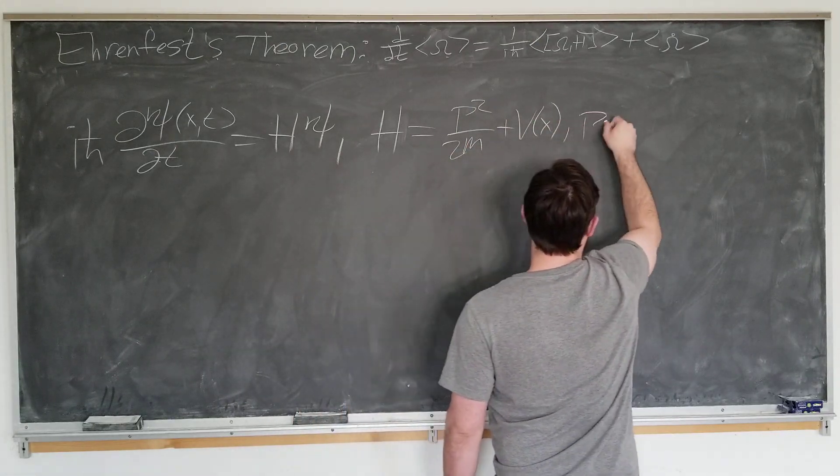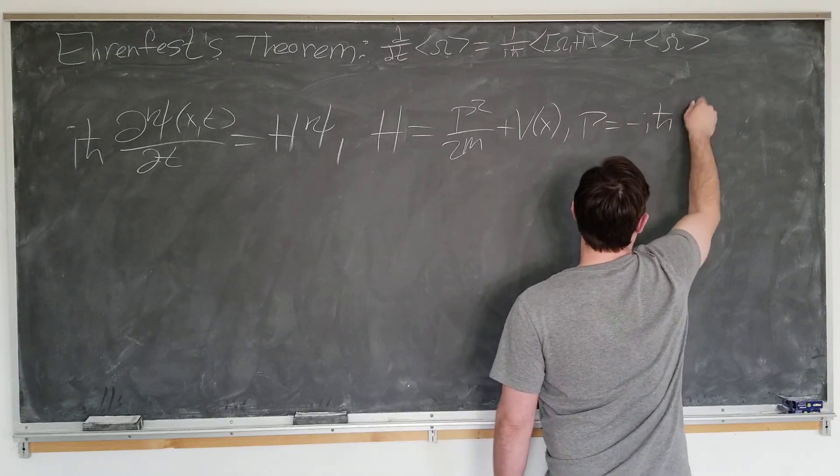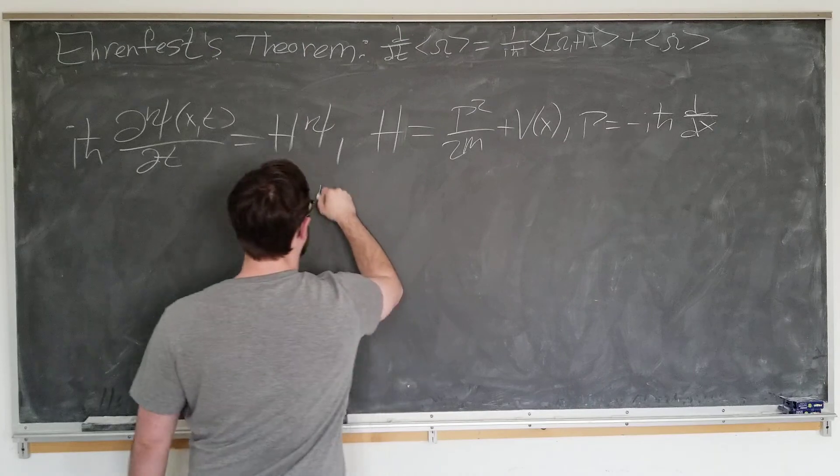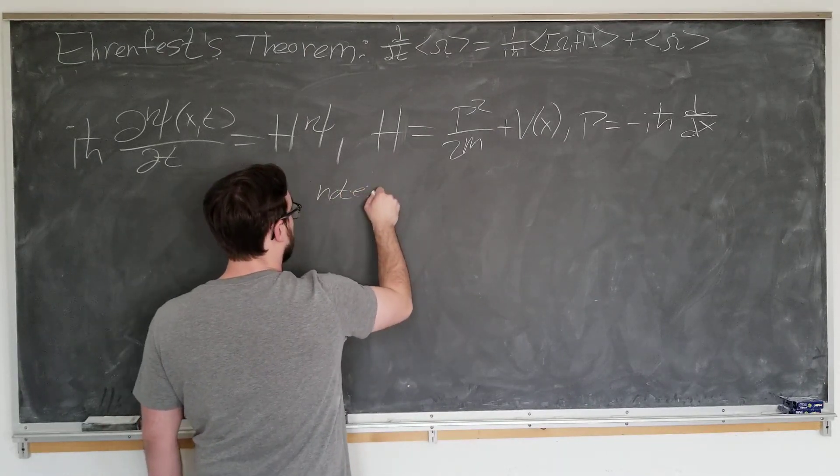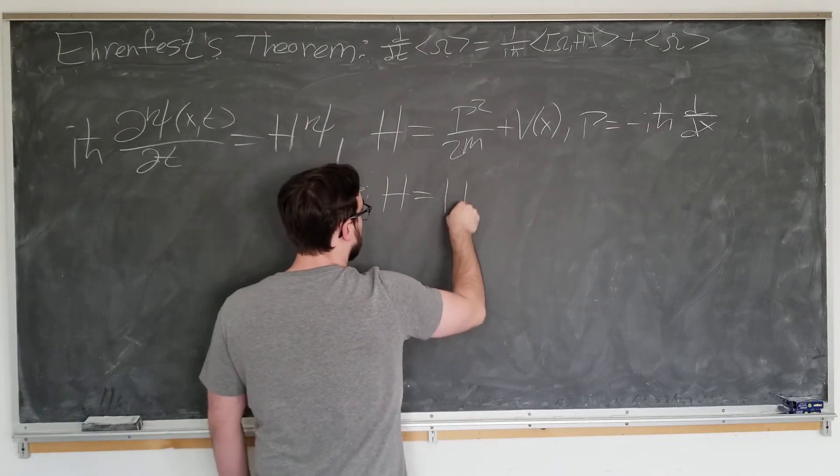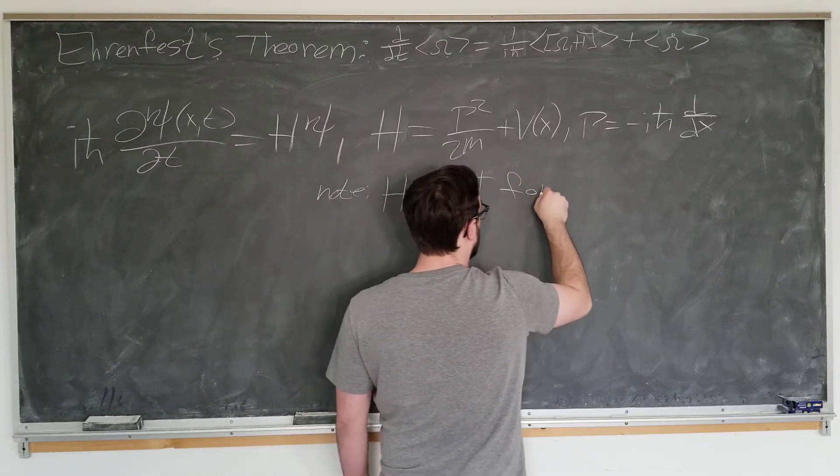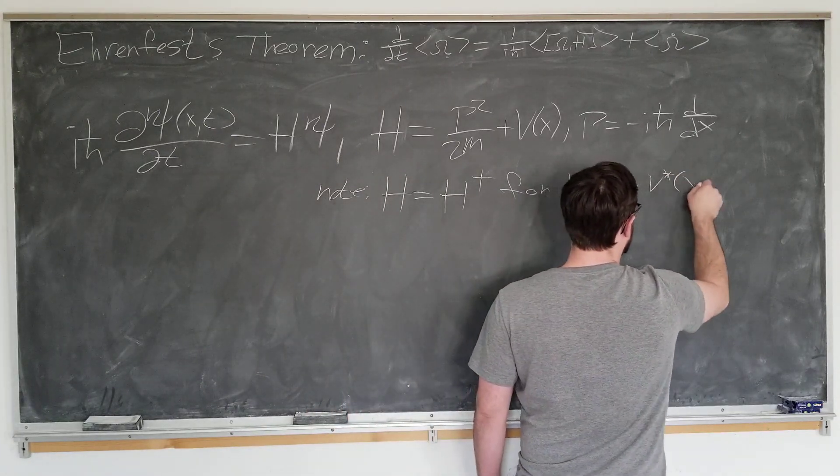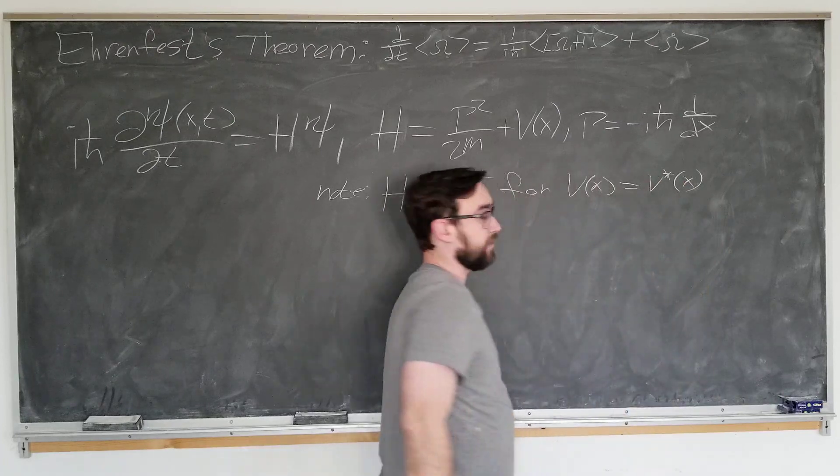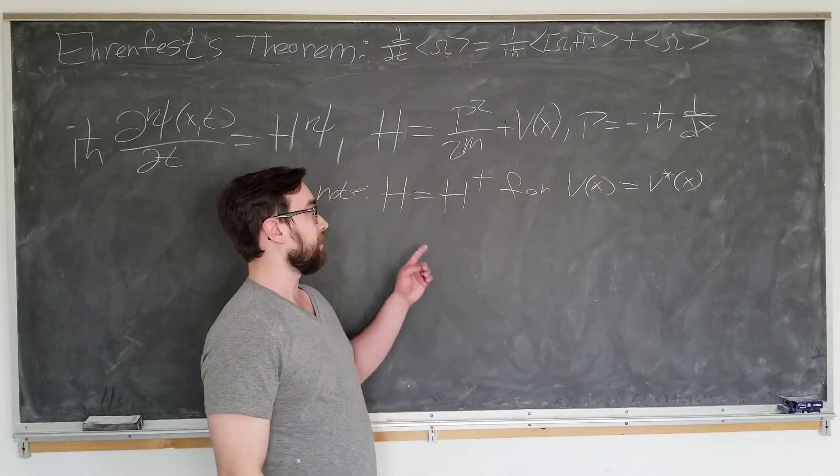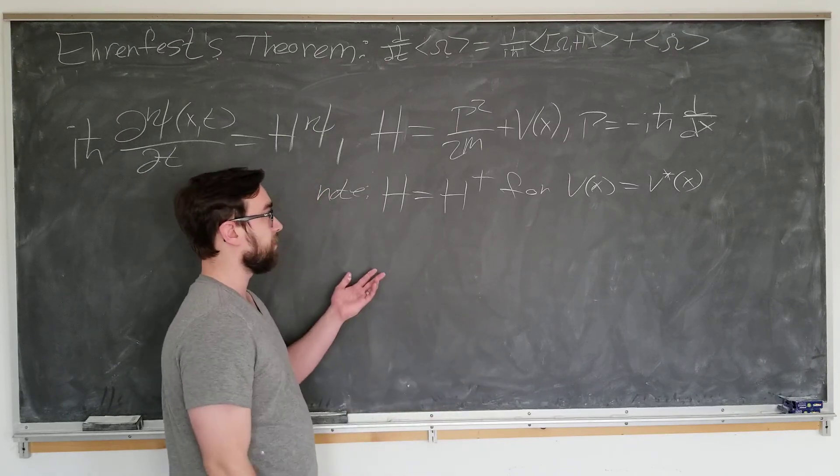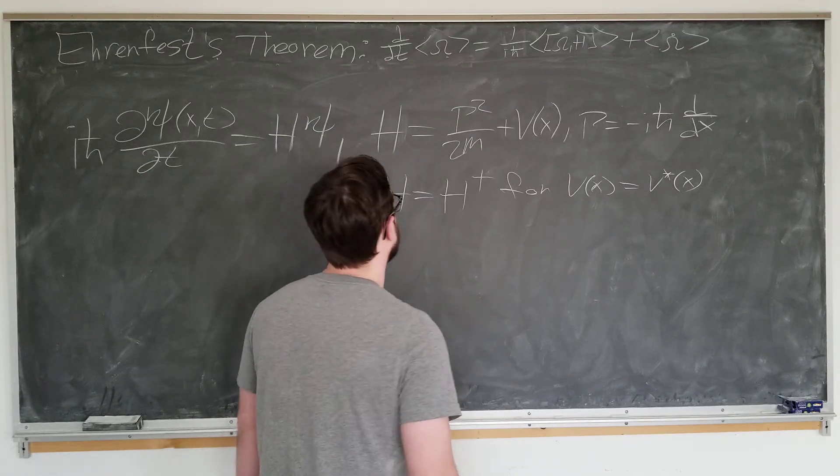p is of course minus i h bar d by dx, and we're going to note that h is Hermitian for a real potential. This is true since h is observable, the total energy of the system, therefore must be Hermitian according to the postulates of quantum mechanics.